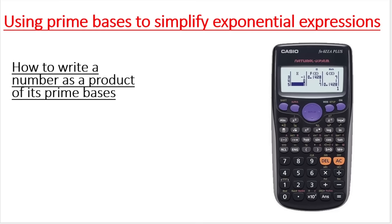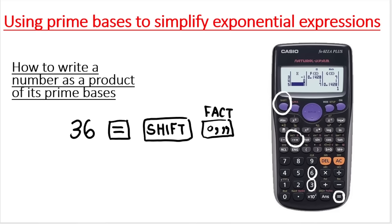Let's choose the number 36. You take your calculator, type in 36, then press the equals button. Then you're going to press shift, and then press the button at the top that says FACT — F-A-C-T. That's what the button on my Casio looks like. You have to press shift in order to activate the FACT function.